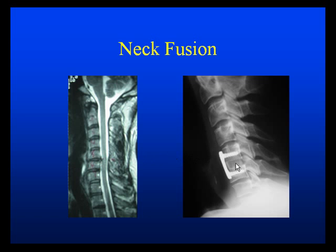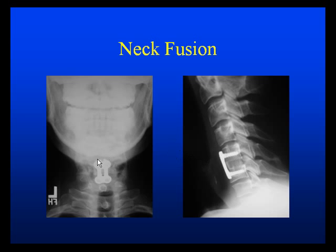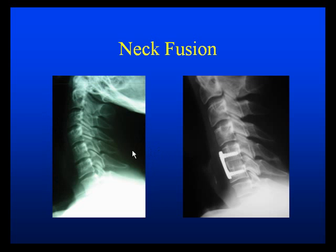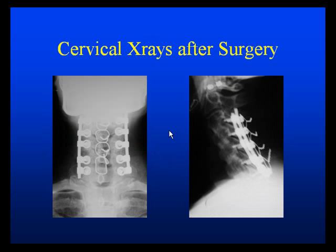The plate and the piece of bone that we have put in there — we can see the same picture from the front, where we see the head and the mouth, and we can see the plate from the front view and then from the side view. This is what a normal neck would have looked like before the plate would have been placed in.